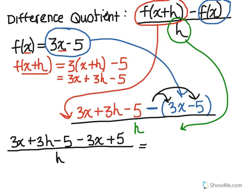And now we can actually do some cancellations. So you see we have 3x minus 3x, that actually just cancels to 0. And we also have minus 5 and plus 5, so those also cancel to 0. That leaves us in the top with only 3h.